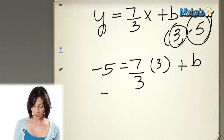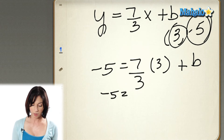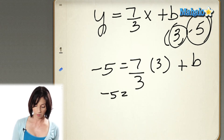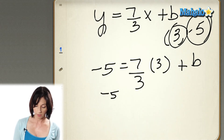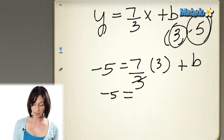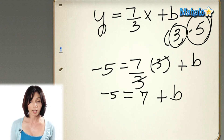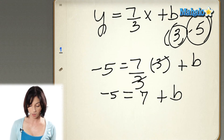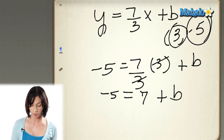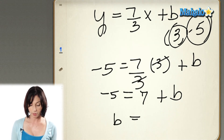Okay, so I have negative 5 equals. Now, this 7 thirds here — my 3s will cancel out, so I actually just have a 7 plus b. So now I just need to solve for b. I can subtract 7 from both sides, and I get b equals negative 12.